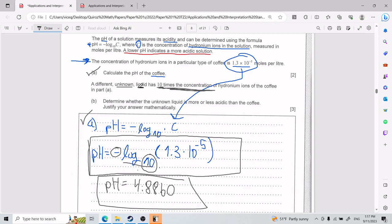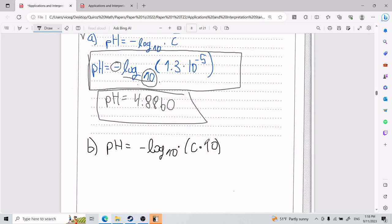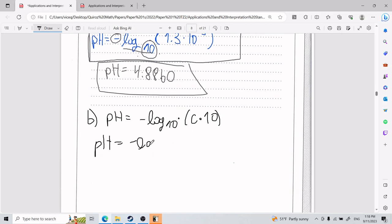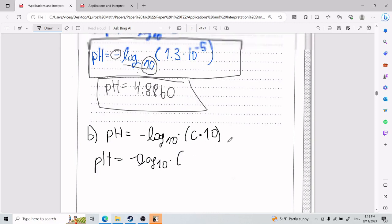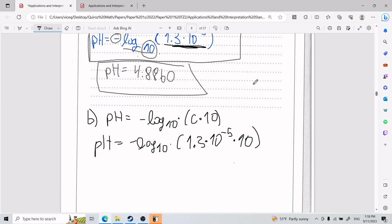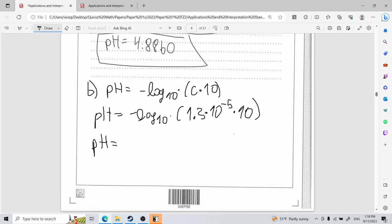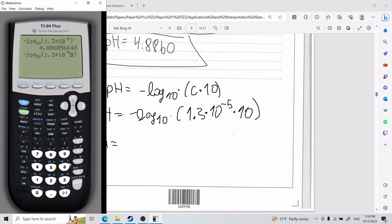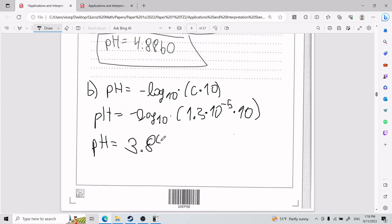So pH equals negative log base 10 times C times 10. We saw that this is C, so I'm going to go ahead and put 1.3 times 10 to the negative 5 times 10. I know it looks kind of nasty, okay? But if you plug it all into your calculator and trust your calculator, it's going to be fine. So if I go ahead and plug this in, I end up with, well, let's see. So over here, I can do times 10. So there I have negative log 10 times C times 10. Beautiful. I end up with 3.8860. So my pH in this case for the unknown one is 3.8860.